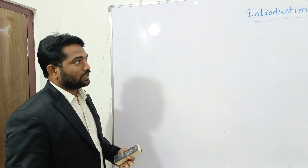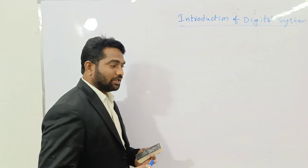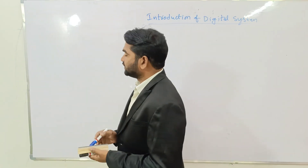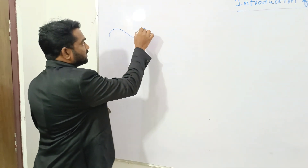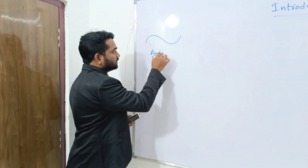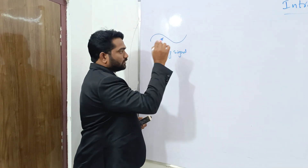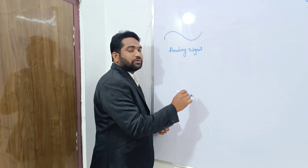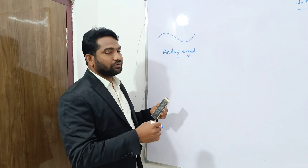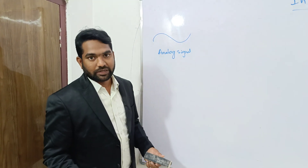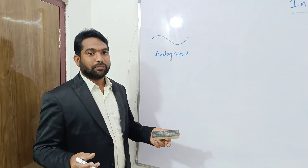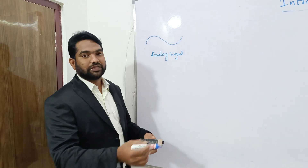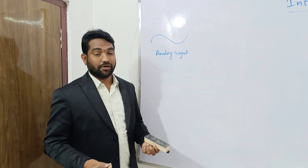Basically, before going to introduce the digital system, I would like to explain the drawbacks or disadvantages of analog system. In the universe, the available inputs are analog signals. The problem with this analog signal is that it cannot transmit for long distance. If we want to send this signal a long distance, we need more power, more equipment, or more input connections — all of which require more costly things. That is one of the disadvantages.